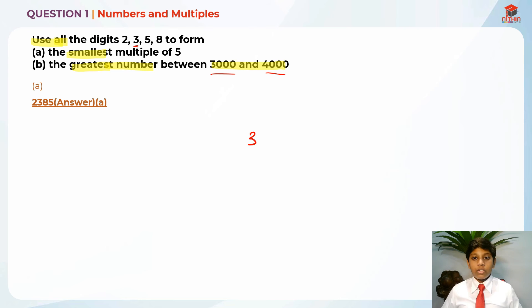And then after that, we should put all the largest numbers after 3. So largest is 8, after that is 5, then we have the last number which is 2. So the answer should be 3,852. So this is the greatest number between 3,000 and 4,000.